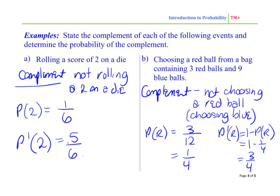So over here I should have actually written: probability of not getting 2 is 1 minus the probability of getting 2, which is 1 minus 1 over 6, which is 5 over 6.